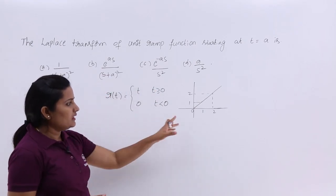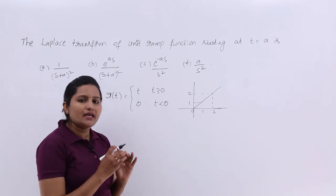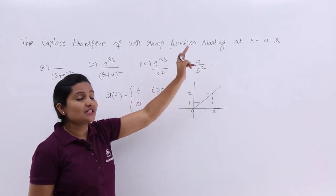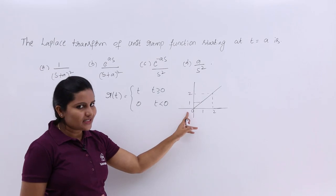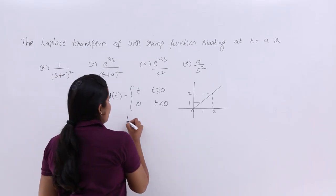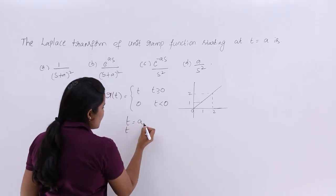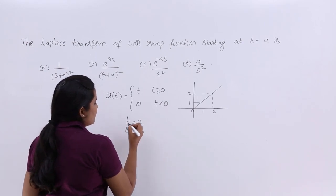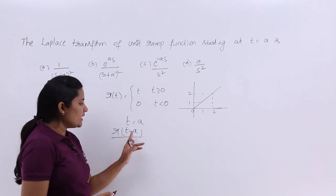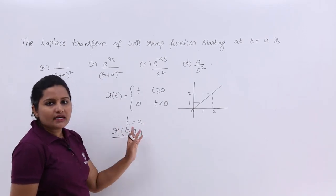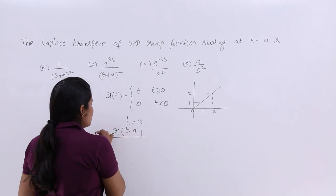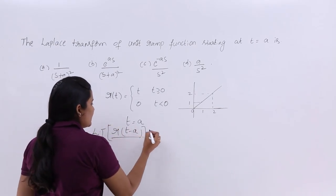But they are not asking about the ramp starting from T equal to 0. Generally the basic ramp starts at 0, but they are asking the Laplace transform of a unit ramp function starting at T equal to A. They are asking a ramp starting at T equal to A, which means R(T minus A). If you send A to the other side, you get the time period of the ramp — R(T minus A) means ramp starting from T equal to A.